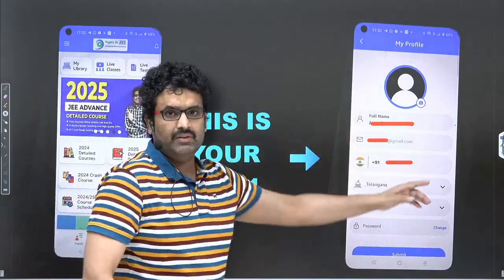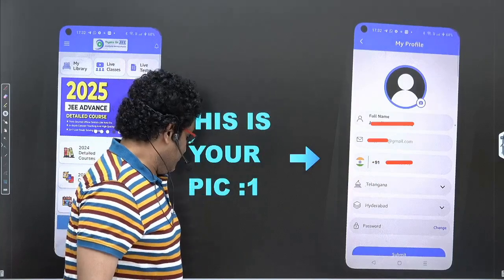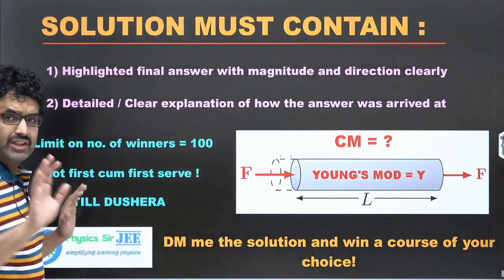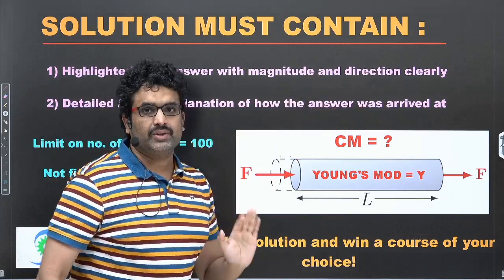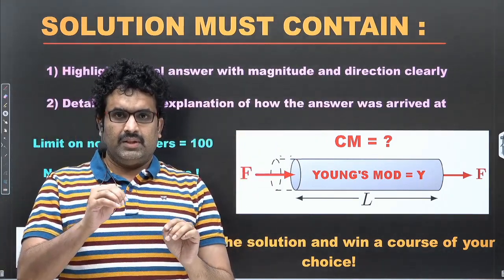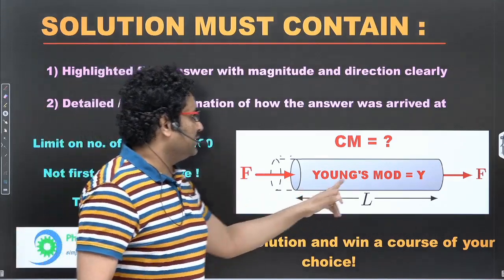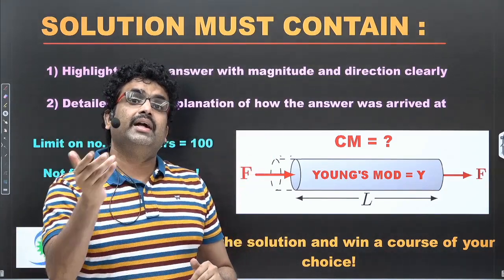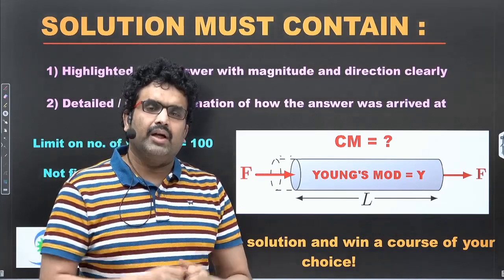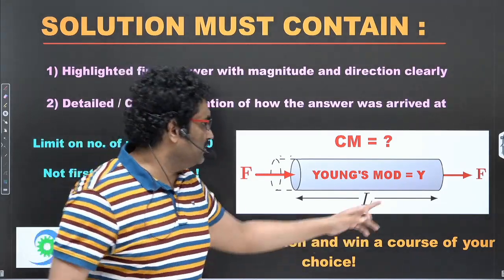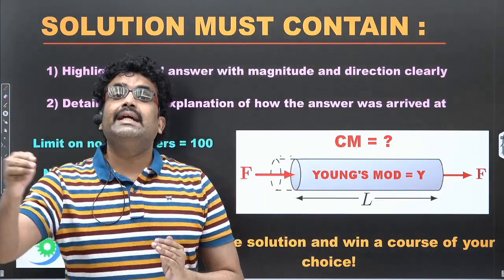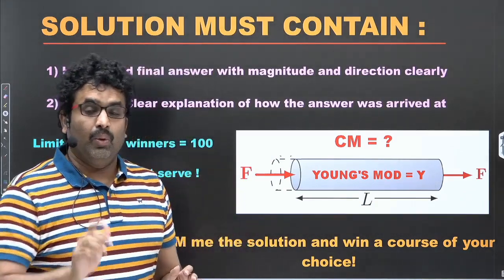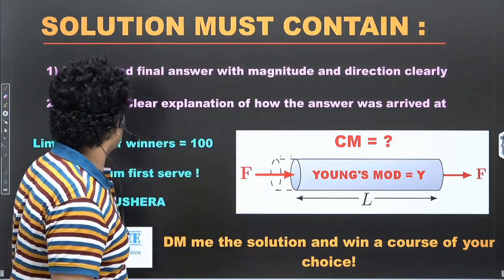Regarding the solution, the final answer with magnitude and direction should be highlighted. Once I open the solution I will check the bottom first. If the answer is that there is no displacement of center of mass from the midpoint, write that and box it. If it is to the right or left of the geometrical midpoint, write the distance in terms of the parameters given. I will be searching for the word 'right', 'left', or 'exactly at the point' and the magnitude.